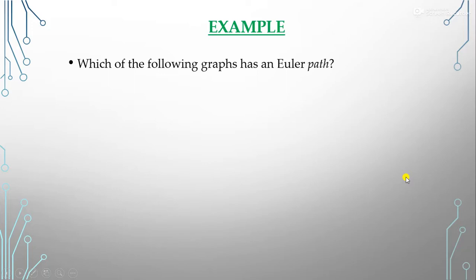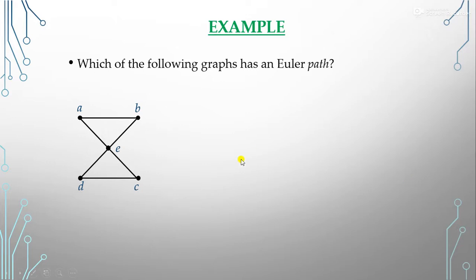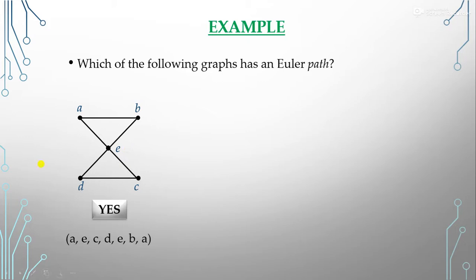Now let us check which graphs form an Euler path. If a graph forms an Euler circuit, it obviously also forms an Euler path. So the first graph we already saw forms an Euler circuit, and therefore it also has the Euler path: a, e, c, d, e, b, a.